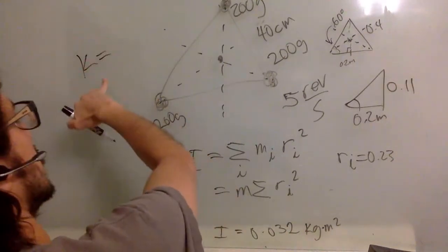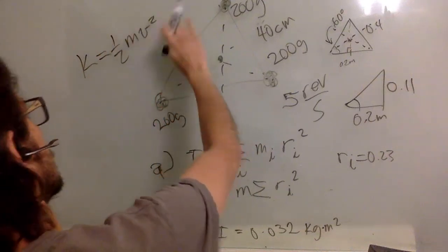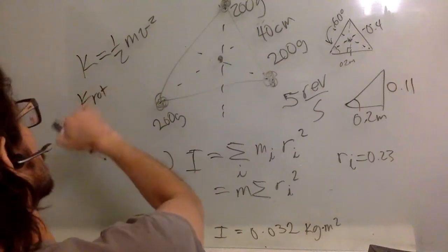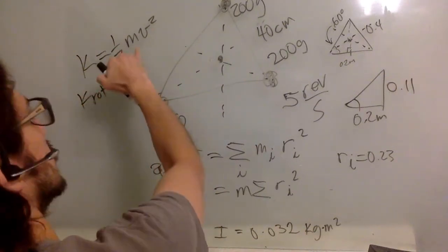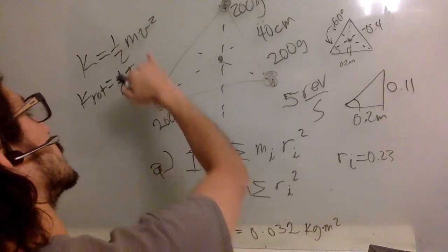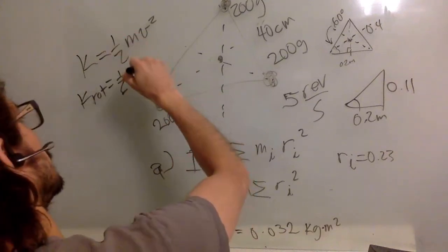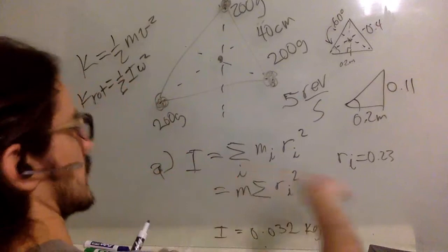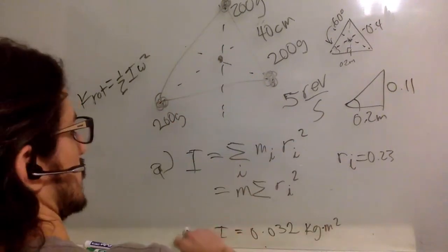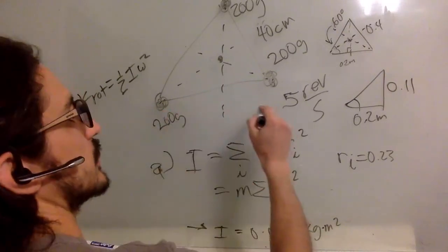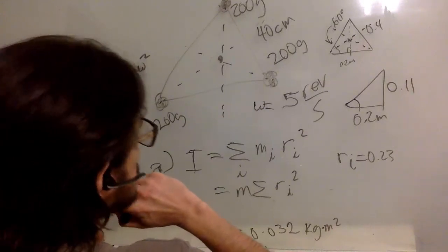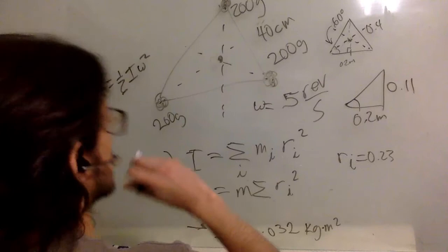So the rotational kinetic energy is one half, instead of the mass you use the analog of the mass, so the moment of inertia. Instead of the velocity, you use the angular velocity, and this is the rotational kinetic energy. So we calculated I, and we have omega.